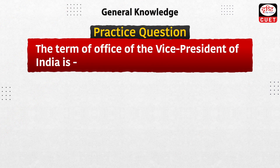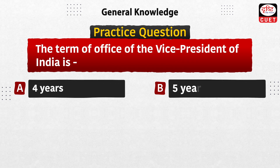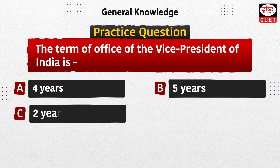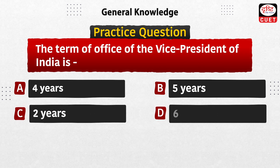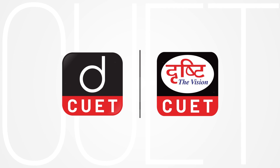Now it is time for the practice question: the term of office of the Vice President of India is — four years, five years, two years, or six years? Send the answer to this question in the comment section. Stay tuned for more such updates. The answer is five years.